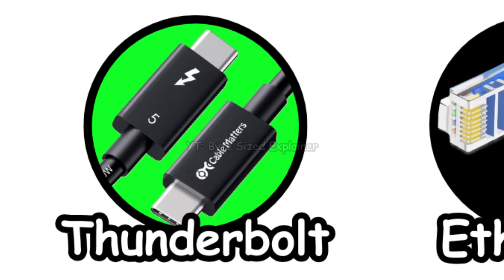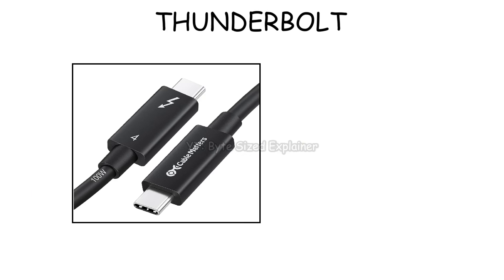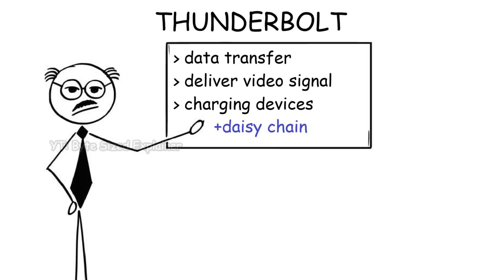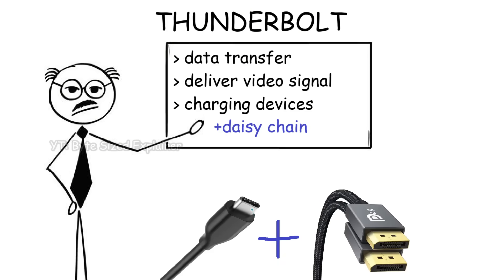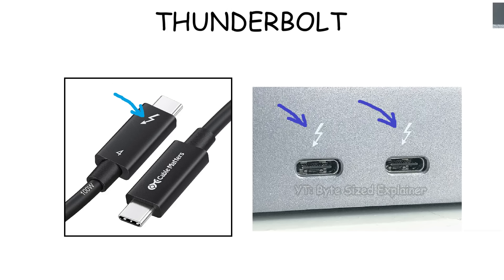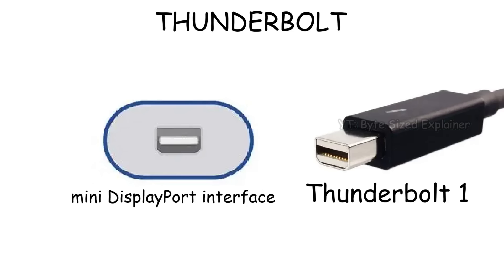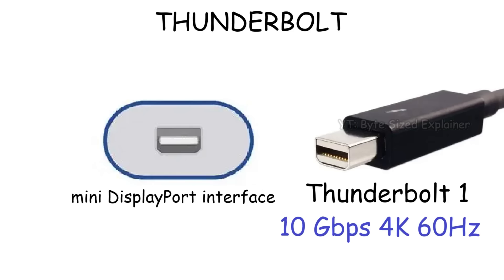Thunderbolt is a high-speed connection technology developed by Intel and Apple. It works just like USB-C, but with the extra ability to daisy-chain multiple monitors. Basically, it's like USB-C combined with DisplayPort. The port itself uses the USB-C shape, but Thunderbolt is marked with a small lightning symbol. The first generation, however, didn't use USB-C yet — it used the mini DisplayPort interface with speeds of 10 gigabits per second and support for 4K at 60Hz.